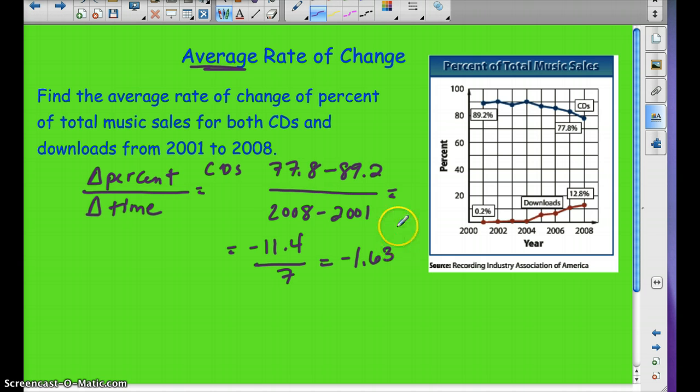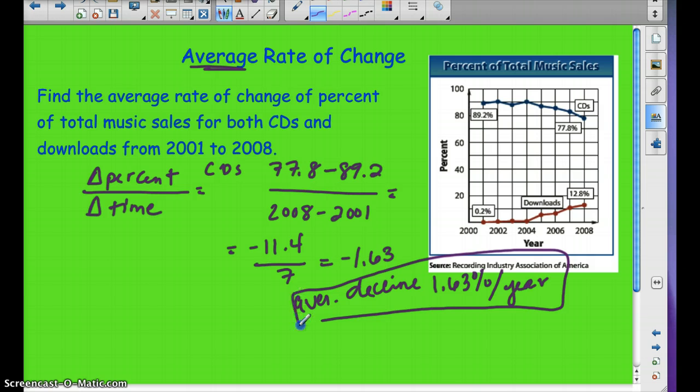So when we do that, we end up with a negative 11.4 over 7, which is a negative 1.63. So how can we say that? What does that mean? Well, it's a decline in sales. A decline, the average decline of 1.63% per year. I guess I should say average decline per year. So why don't you pause the video and go ahead and do the download, see what the average rate of change is for the downloads. So this is for the CDs.